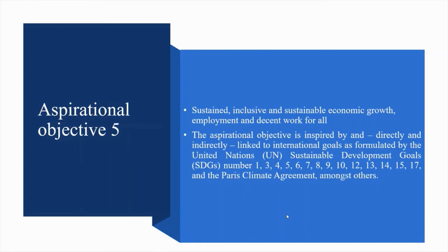Aspirational objective 5: Sustain inclusive and sustainable economic growth, employment and decent work for all. This aspirational objective is linked to UN SDGs: No. 1 No Poverty, No. 3 Health and Well-Being, No. 4 Quality Education, No. 5 Gender Equality, No. 6 Clean Water and Sanitation, No. 7 Affordable and Clean Energy, No. 8 Decent Work and Economic Growth, No. 9 Industry Innovation and Infrastructure, No. 10 Reduced Inequalities, No. 12 Sustainable Production and Consumption, No. 13 Climate Action, No. 14 Marine Protection, and No. 15 Biodiversity.